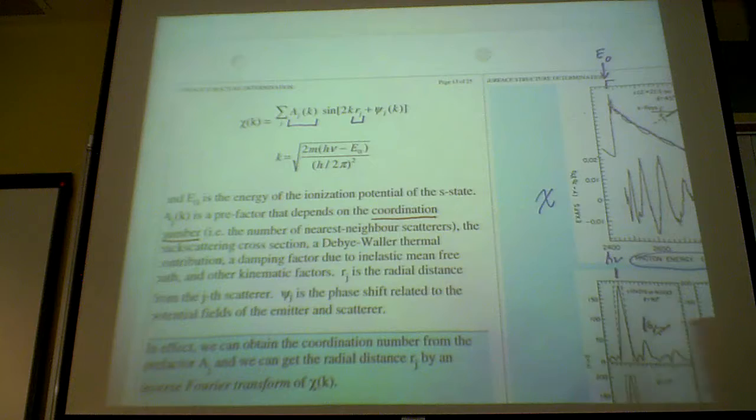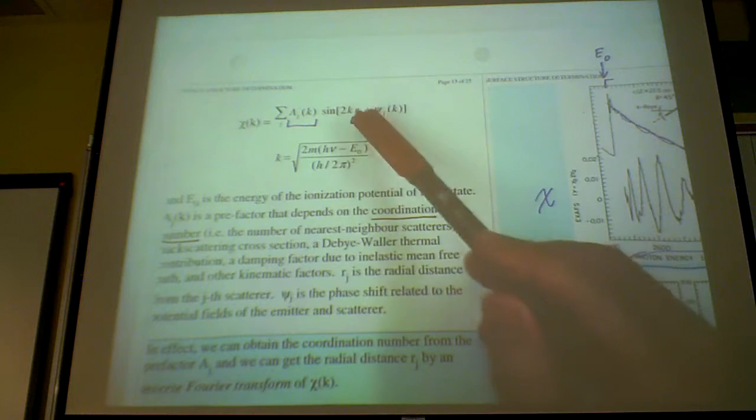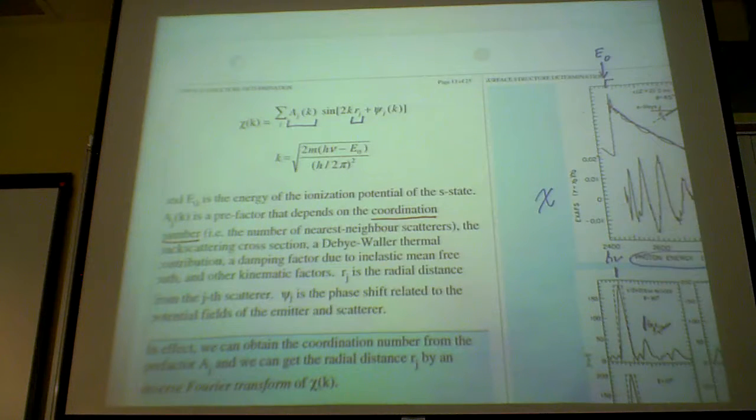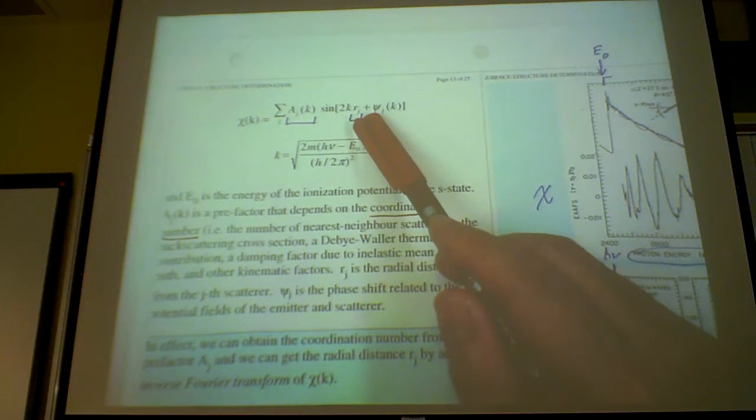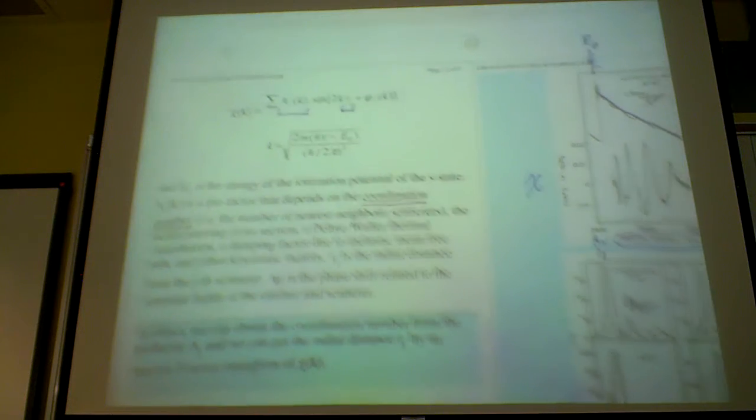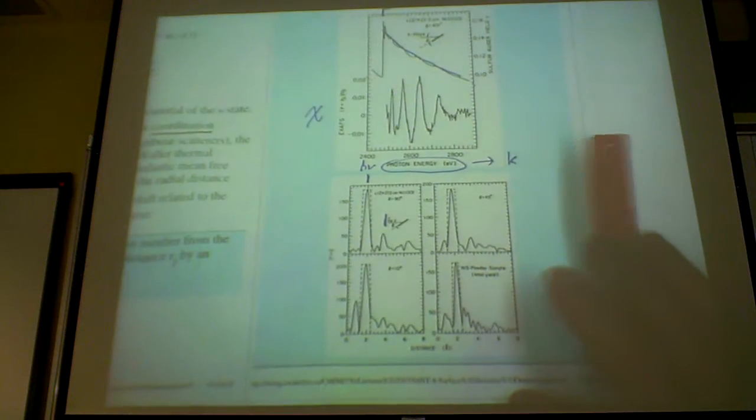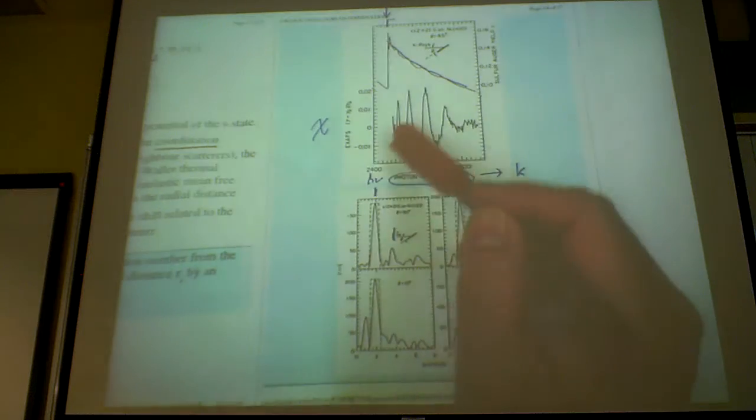So two things that I want to impress on you. One is that the intensity depends on the coordination number. And the intensity, how this spreads out, this wiggle going, the cycling of this wiggle depends on the interatomic separation between your emitter and the scatterer that you have. Now, for a simple way of mathematics, once you've got a wiggle like this, physicists can easily find out what is the most probable wiggle that, what kind of interatomic distance you would have in order to generate a pattern like this.